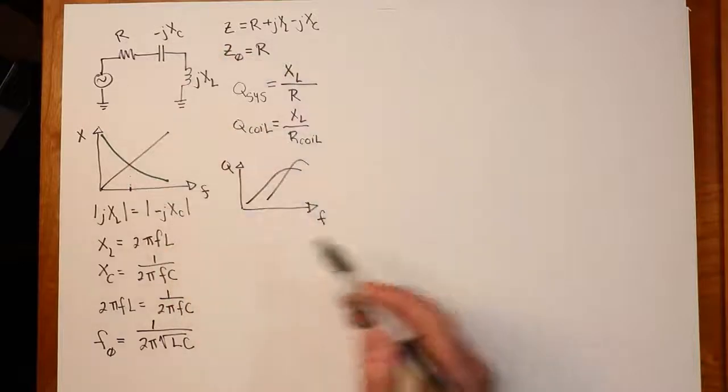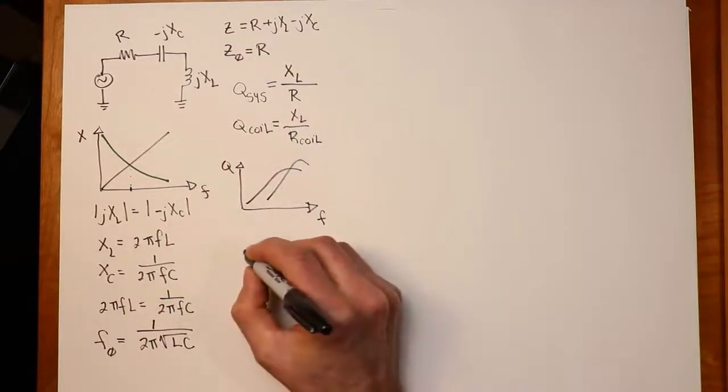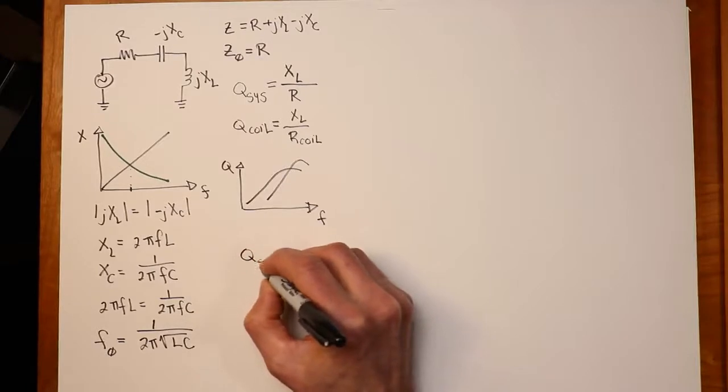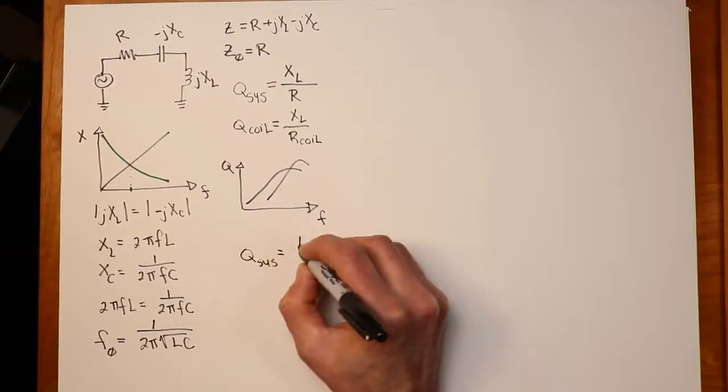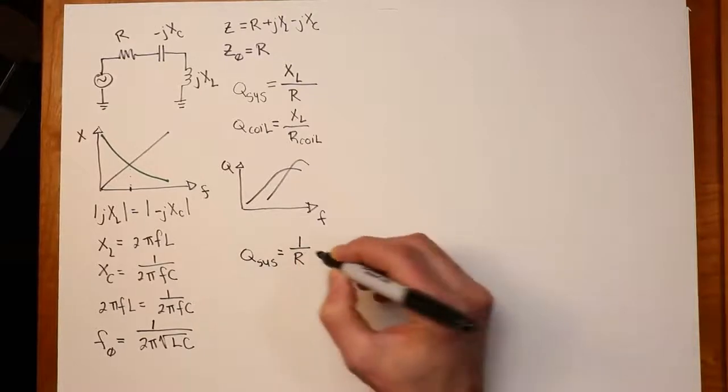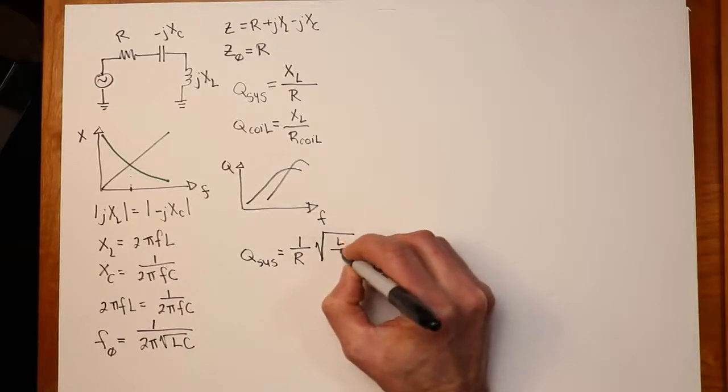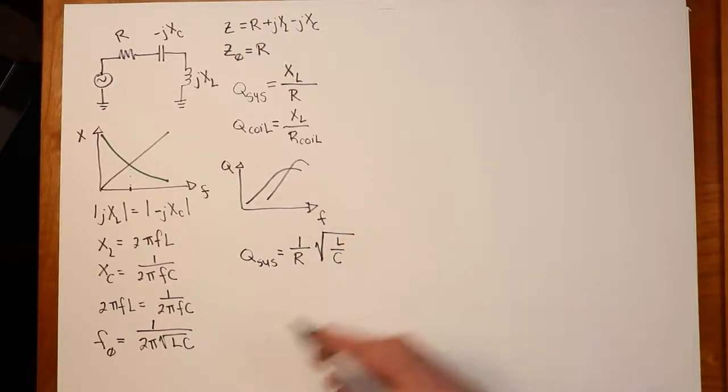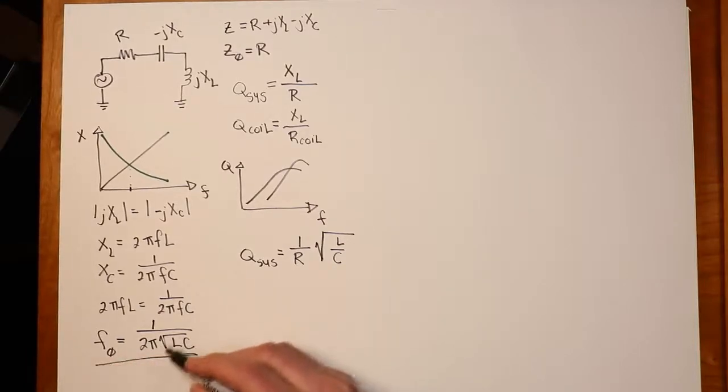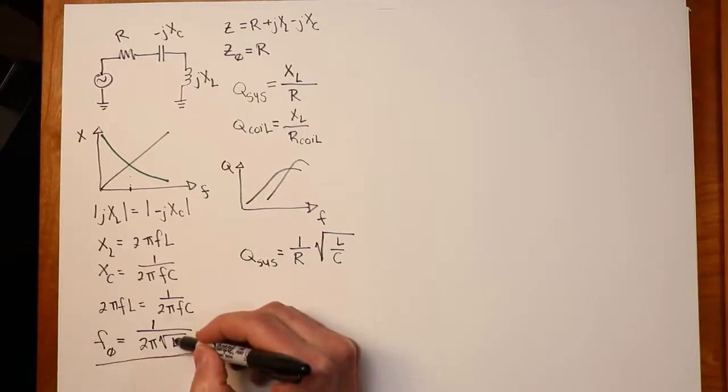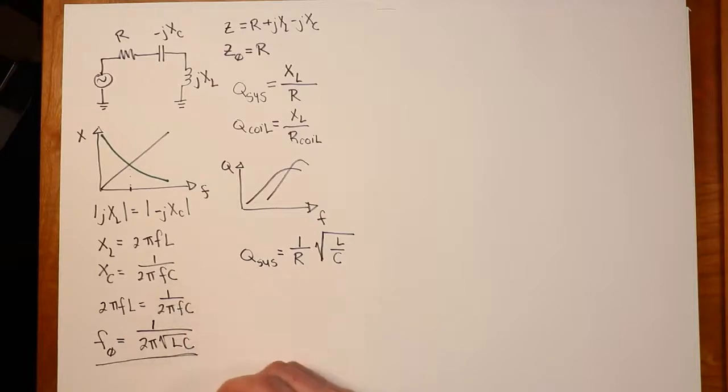Another thing you can do, there is a proof of this in the text. Q of the system can also be found as the reciprocal of resistance times the square root of L over C. If you think about this for a sec, if you look at this equation, you realize there's an infinite number of pairs of LC that can get you a particular critical frequency. For whatever change you make in L, you make the opposite change in C, and f0 is the same.